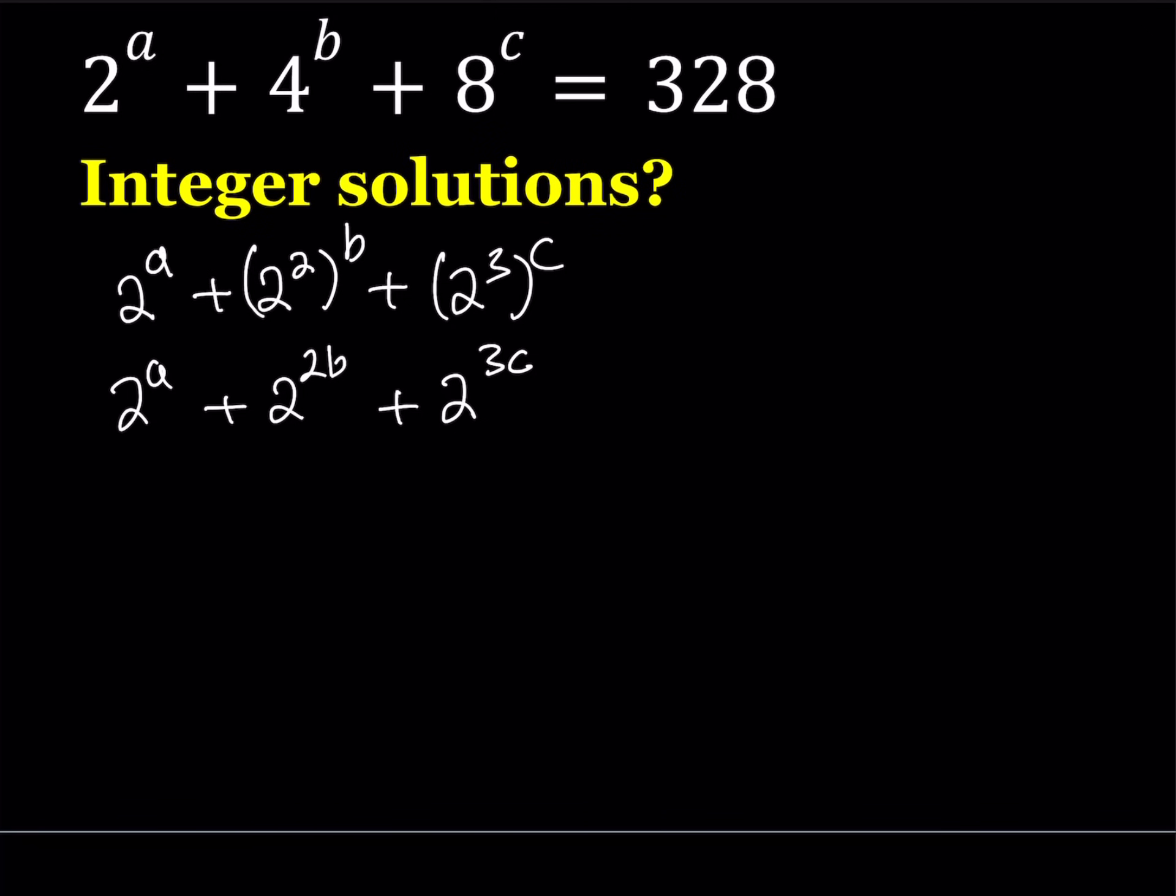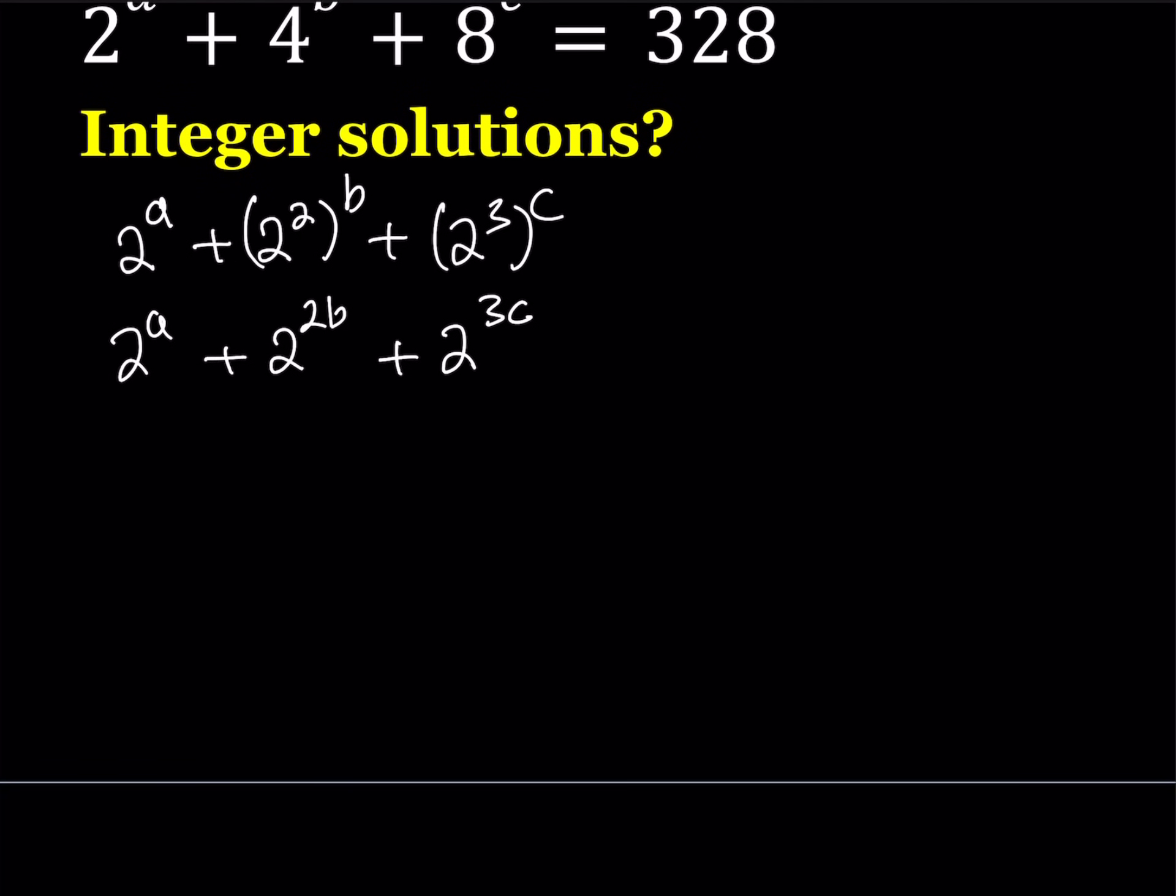So what am I going to do with this expression? First of all, they are all different powers. One of them is a multiple of 2, one is a multiple of 3, and so forth. I'd like to factor out something, because a lot of times with exponential equations, factoring helps.